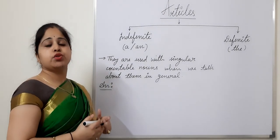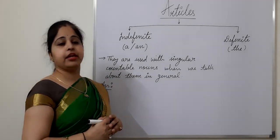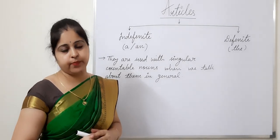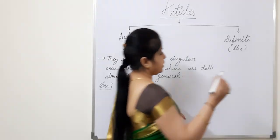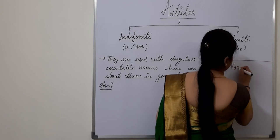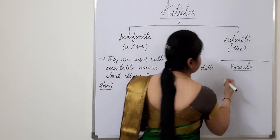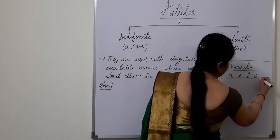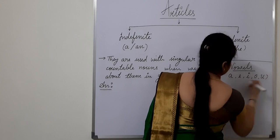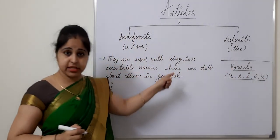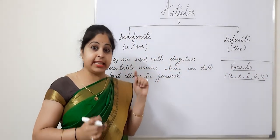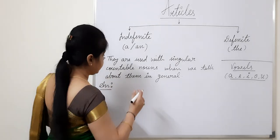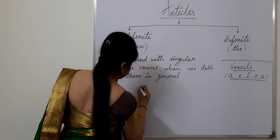To know the use of article AN, we should also know the vowels and their sounds. Let us see what the vowels are. Vowels are A, E, I, O, and U. We will be focusing on them and their sounds. First example: 'an apple'.